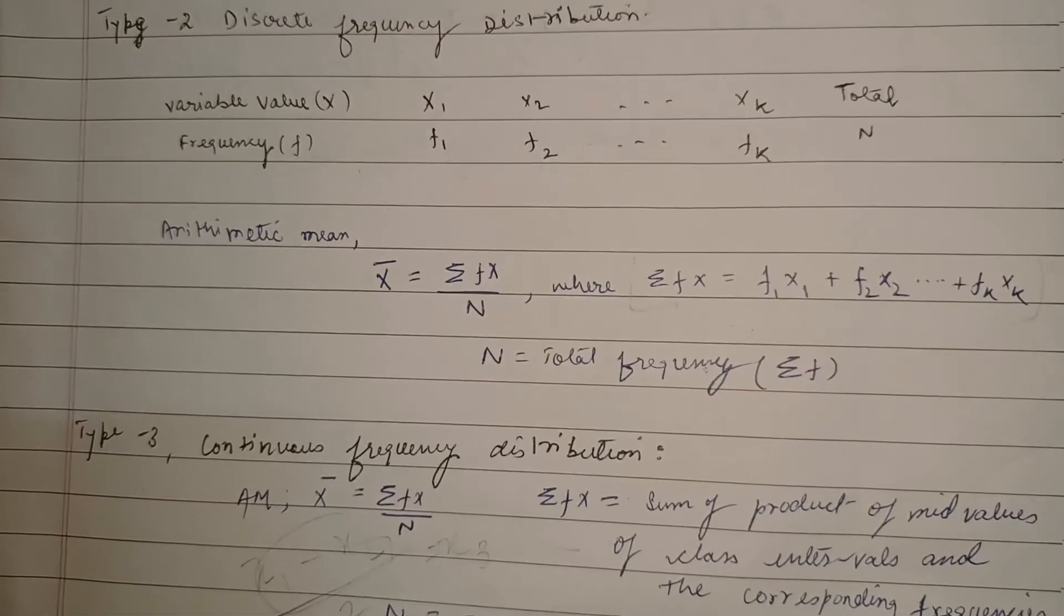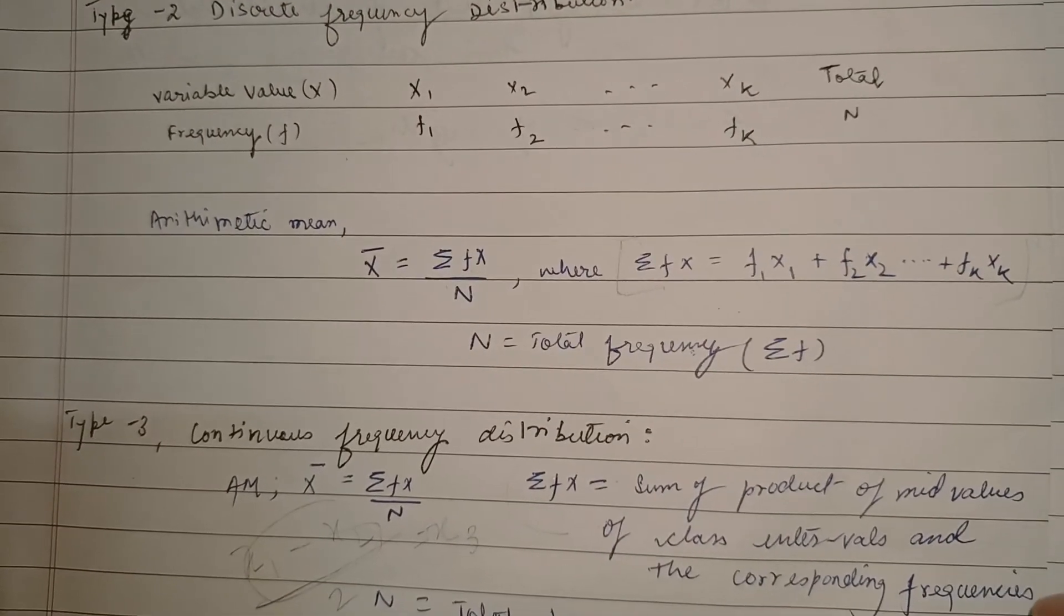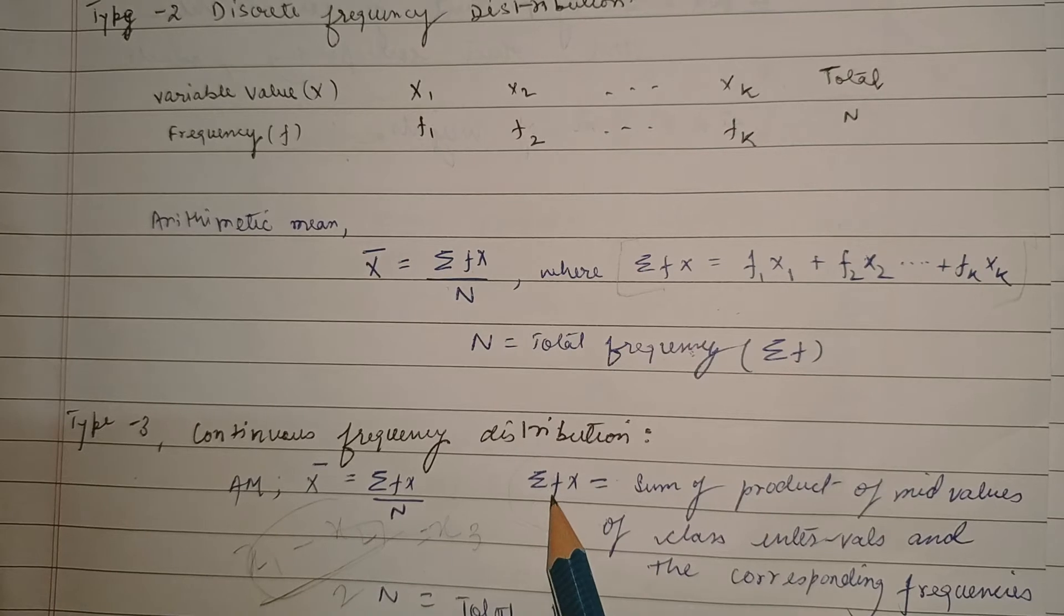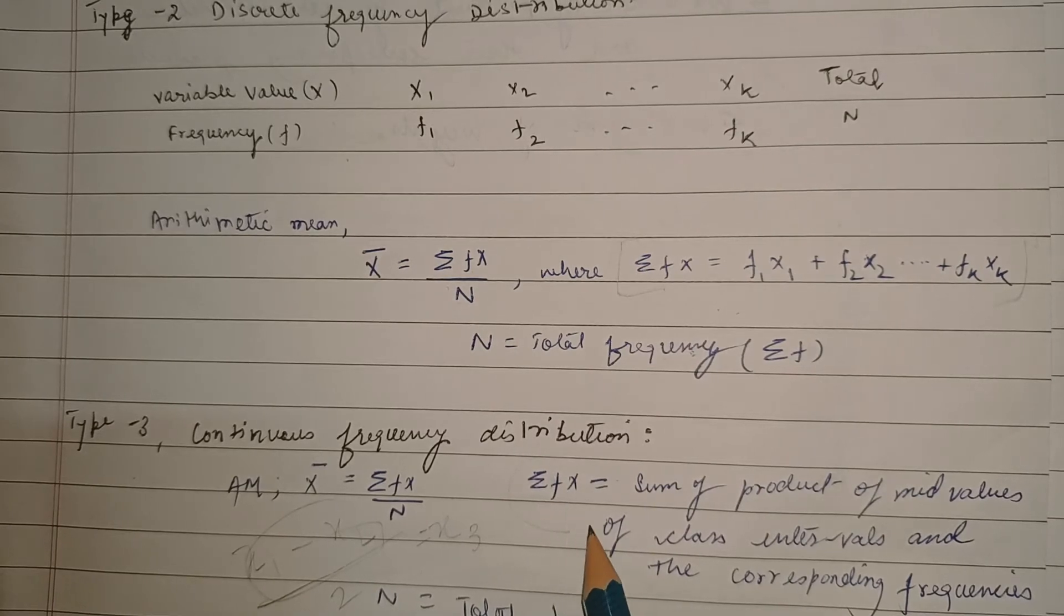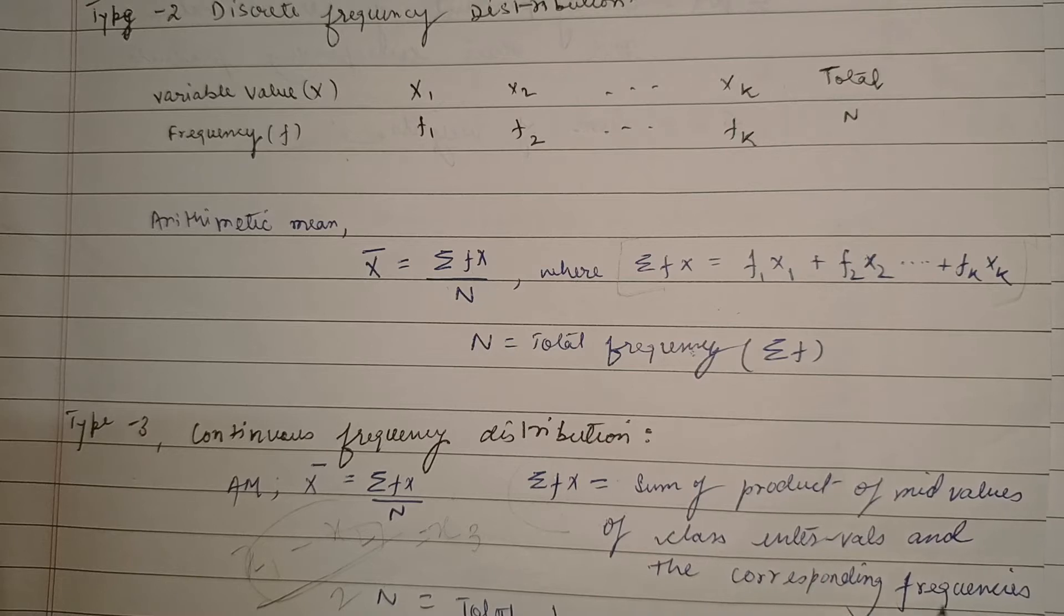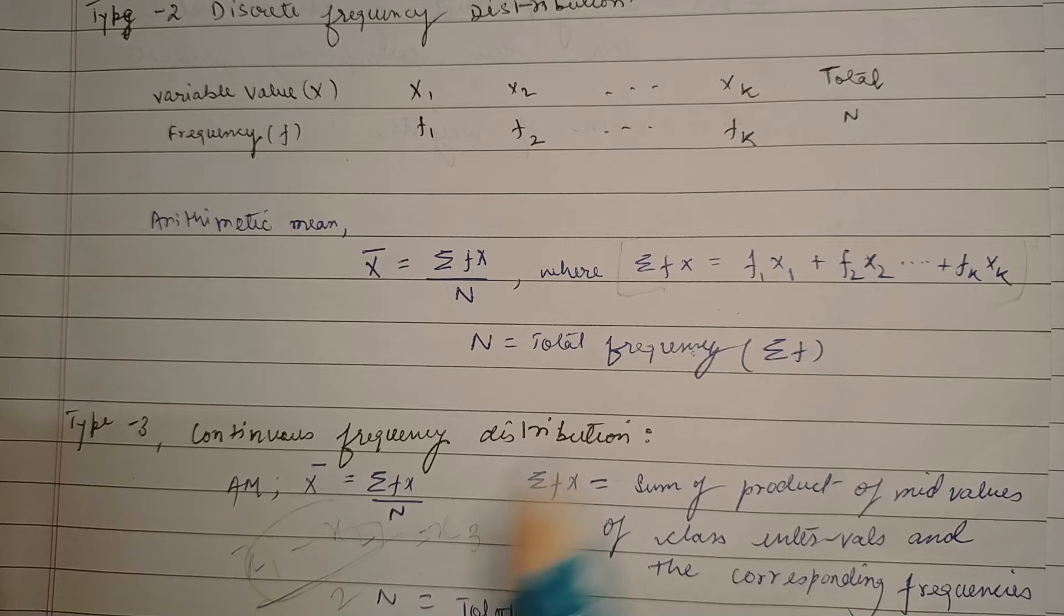The third kind of data is continuous frequency distribution. Here sigma fx is sum of product of mid values of class intervals and the corresponding frequencies. This concept would be more clear when we hop on to problem solving. I'll tell you in detail about that in problem solving.